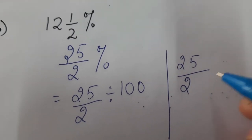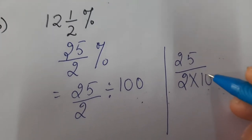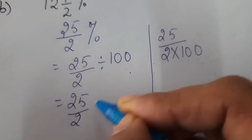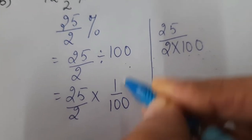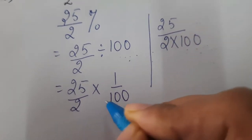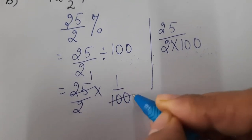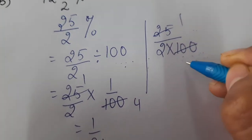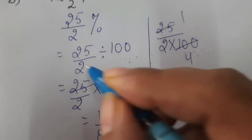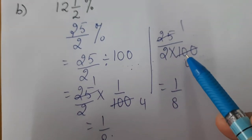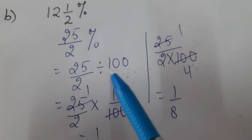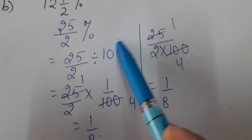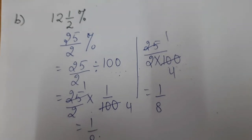You can also write this as 25 upon 2 with 100 in the denominator. To solve, the division sign becomes multiplication and we take the reciprocal of the divisor — 100 becomes 1 upon 100. Then 25 upon 2 multiplied by 1 upon 100: 25 fours are 100, so this becomes 1 upon 8. You can use either method — directly placing 100 in the denominator, or converting division to multiplication with a reciprocal.